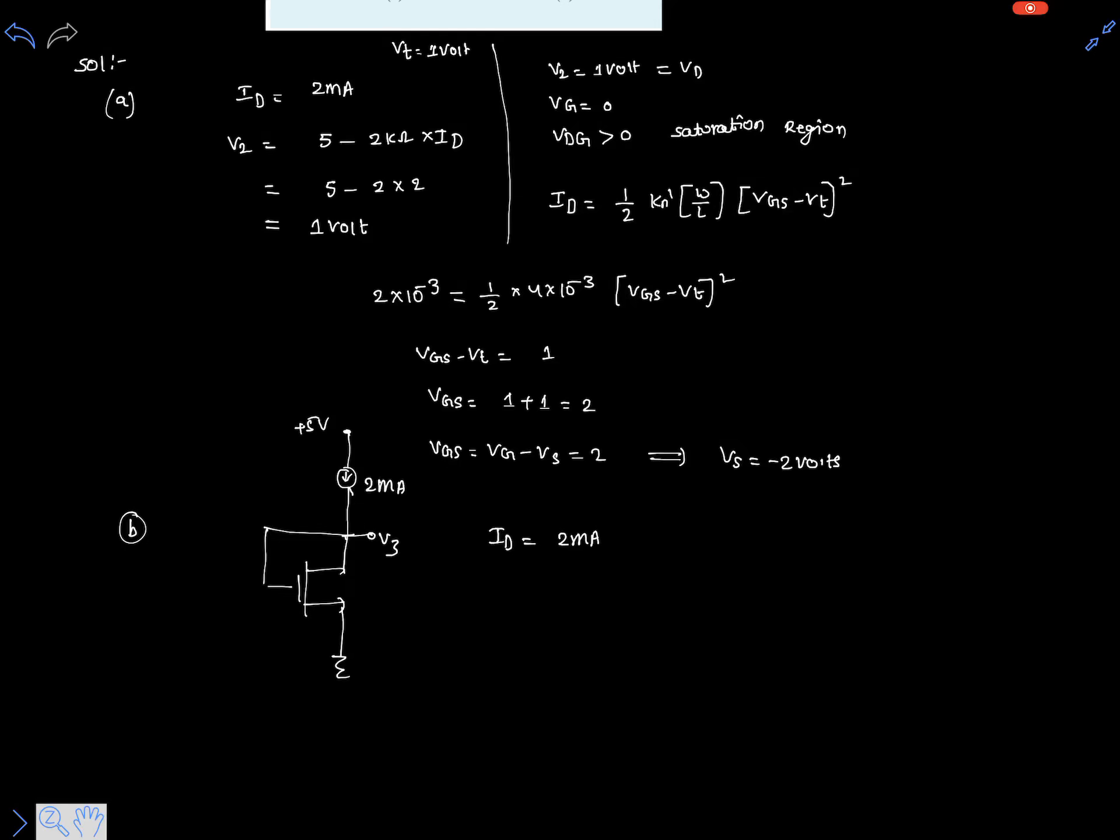Let's write the diode current equation for saturation. That is half times 4 times 10 to the power of minus 3, times (vgs minus vt) squared. vgs is clearly v3 here, minus vt squared.